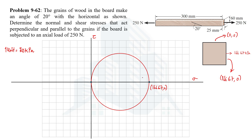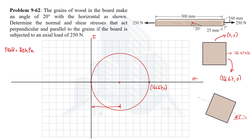This state of stress is now shown on the Mohr's circle. We have to determine the state of stress on the grains of wood which make an angle of 20 degrees with the horizontal. For the determination of stress at any unknown orientation, we need to know the center and radius of the Mohr's circle. The center is found by averaging the two normal stresses: zero and 166.67, giving a center of 83.33 kPa. This value also equals the radius.